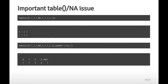An important issue with table() and missing values: by default, table() does not show NA counts. If you create a vector with values 0, 1, 2, 3, NA, 3, 3, 2, 2, 3, the table will show counts for 0, 1, 2, and 3 but not for NA. To include missing values in the table, set the useNA option to 'ifany' — then the NA count will also appear.